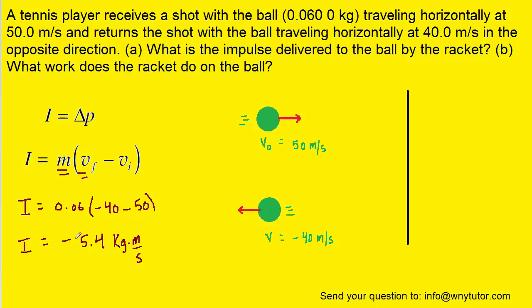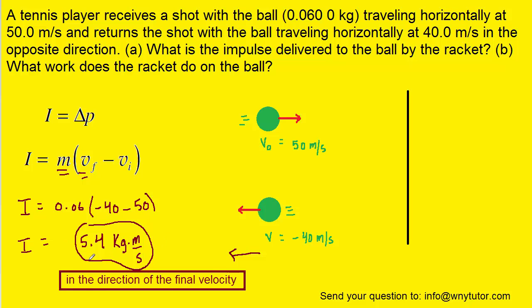Now the negative sign indicates that the overall direction of the impulse is to the left in our diagram. Another way of saying that would be that the impulse is 5.4 kilograms times meters per second in the direction of the final velocity of the ball.